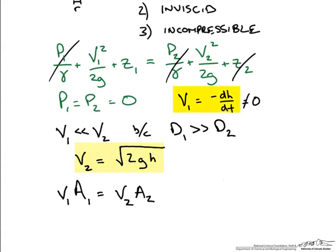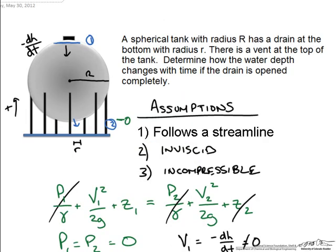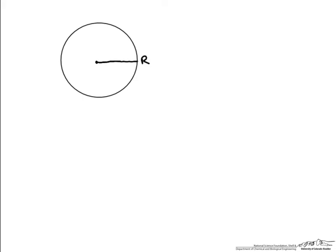Now we have expressions for v1 and v2 and we can calculate a1 and a2. The cross-sectional area of the drain pipe is simply pi r squared. However, as the fluid height changes, the cross-sectional area at point 1 also changes with time. Using geometry we can find a relationship between the height of the fluid and the radius of that cross-section. We draw a sphere of radius R with two fluid heights, one above and one below the center, designating the height from the bottom as h(t).